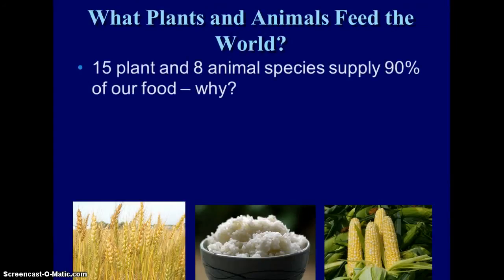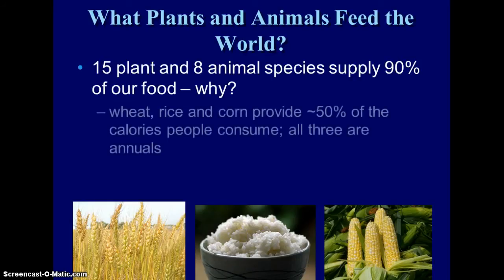There are only about 15 plant and 8 animal species that supply 90% of our food. Wheat, rice, and corn provide about half of the calories that you consume. All three of these are annuals, which means they have to be replanted every year, and when we have to replant something every year, that means at the end of the season we plow it up.